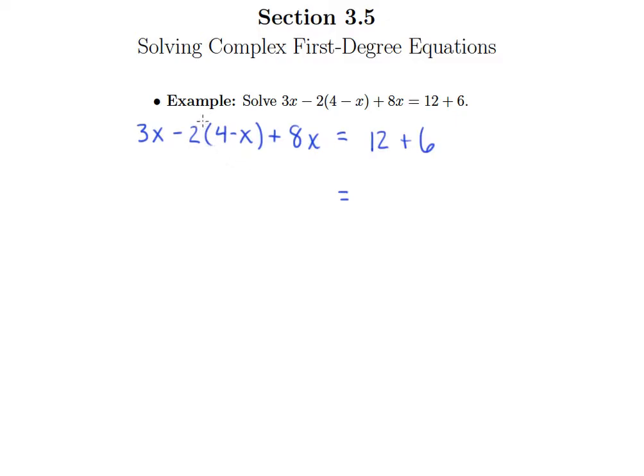So on the left side I know the first thing I need to do is to distribute negative 2 through to both of those terms. Now nothing's happening with this 3x so I'm going to rewrite it. Everything needs to get rewritten. And then remember we think of this minus as just a negative 2, so negative 2 times 4 is negative 8 so I'll write minus 8, and negative 2 times negative x would be positive 2x so I'll write plus 2x. And then again this 8x, nothing happened with it so I rewrite it.